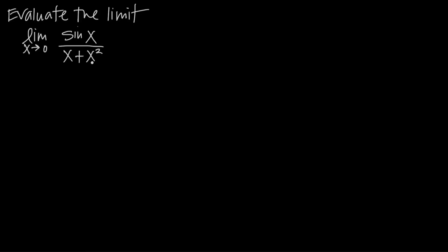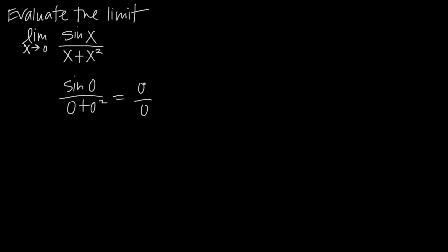The difficulty in evaluating this limit is that if we plug x equals 0 into this function, we get sine of 0 divided by 0 plus 0 squared. Sine of 0 is 0, and 0 plus 0 squared is 0, so we end up with 0 divided by 0. Something like this is called an indeterminate form — either 0 over 0, infinity divided by infinity, 0 times infinity — those are all indeterminate forms.